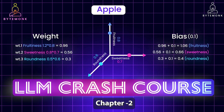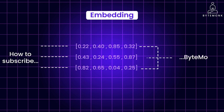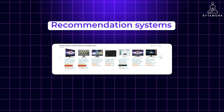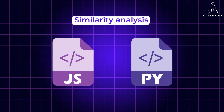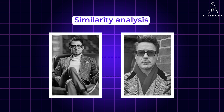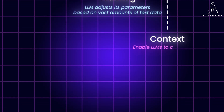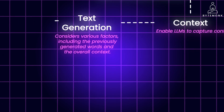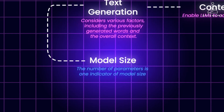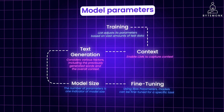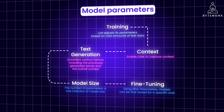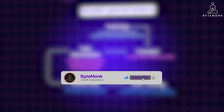In this video, we will continue to learn a few more key concepts of LLMs. We will explore practical applications of embeddings like semantic search, recommendation systems, clustering, and similarity analysis. We will also look into the basics of parameters and their significance in AI. Don't let this technical jargon overwhelm you — if you watched my previous video, I am confident that by the end of this one, you will have a solid understanding of each of these key AI concepts. So let's get started.